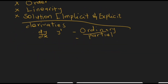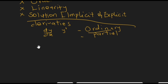When we say the ordinary differential equation, we mean that we have ordinary derivatives. In an ordinary differential equation you are going to have one independent variable. For example, if y equals x, then x is the independent variable and y is the dependent variable. In any ordinary differential equation you have only one independent variable — the y with respect to dx — and any other variable is treated as a constant.